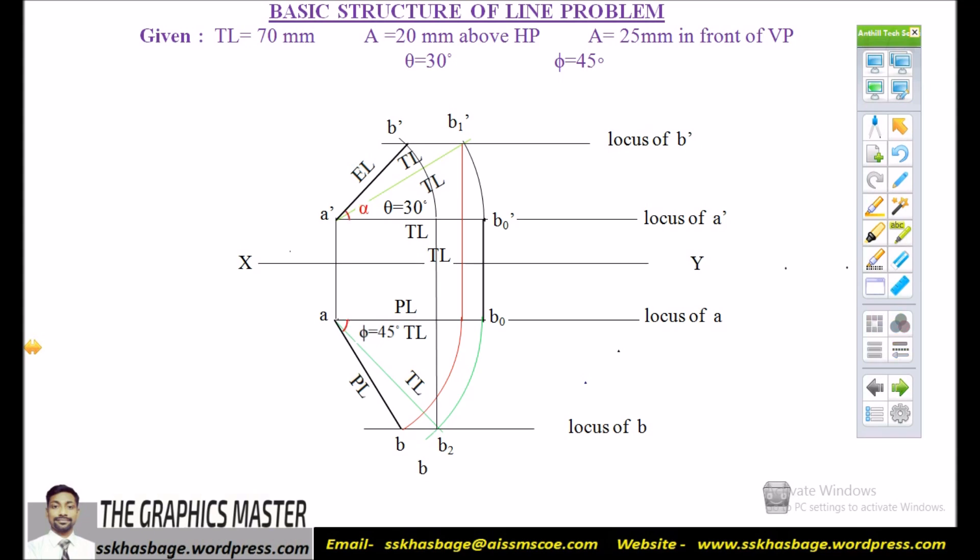The angle made by EL in front view is called as alpha and we have to measure this angle. Also the angle made by the plan length in top view is called as beta.